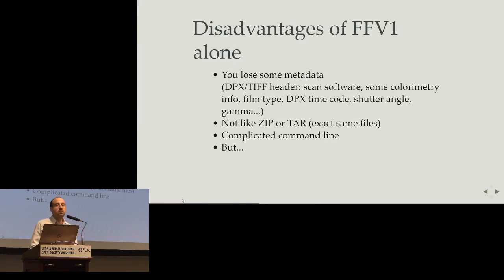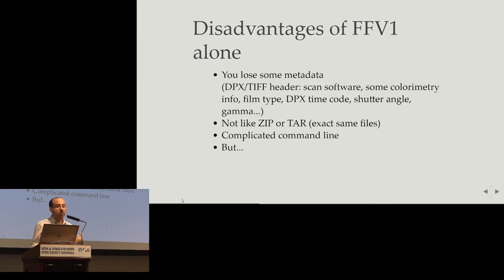One disadvantage currently of FFV1 alone is that FFV1 is focused on the content — what you see, the visual content — not on the metadata. So if you compress your DPX and TIFF into FFV1, we keep the visual content, but we don't keep the DPX and TIFF metadata.